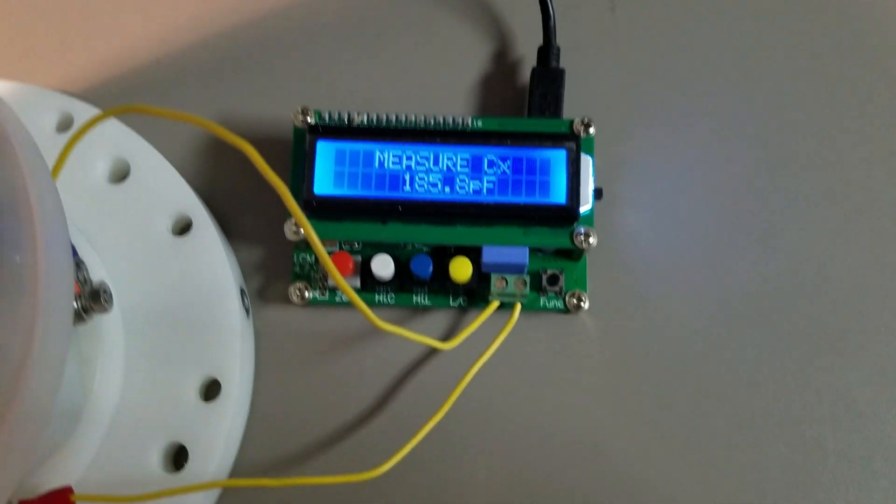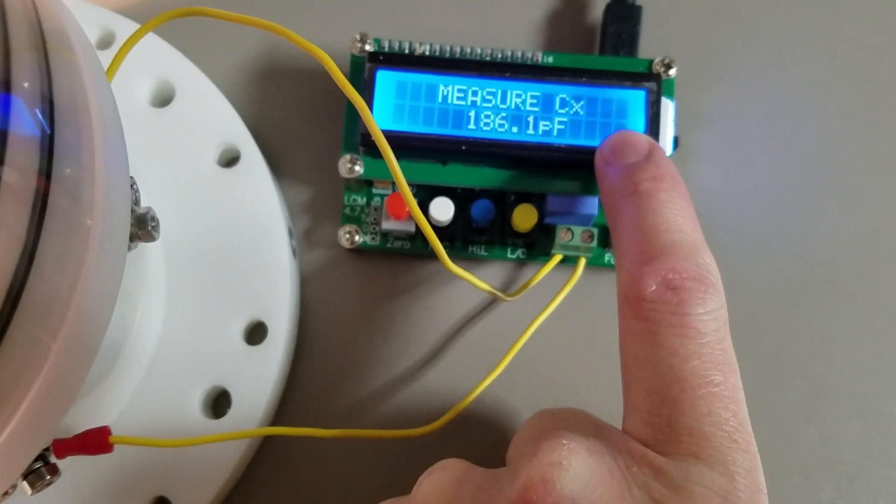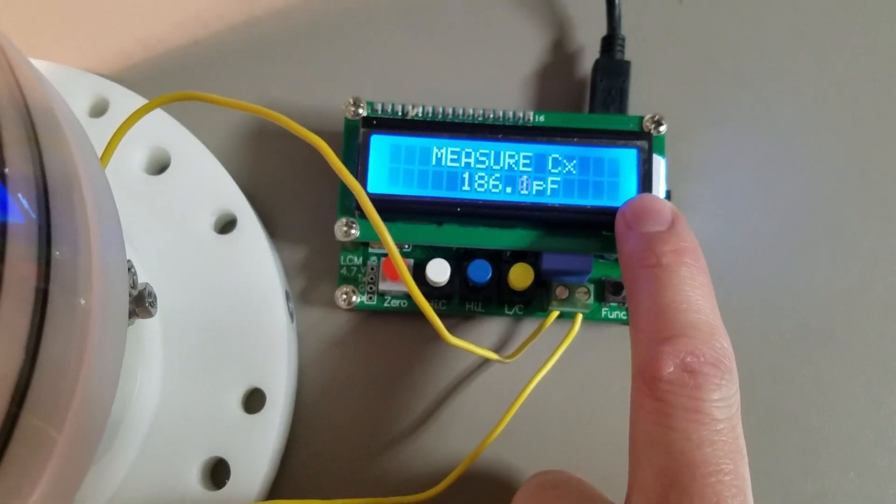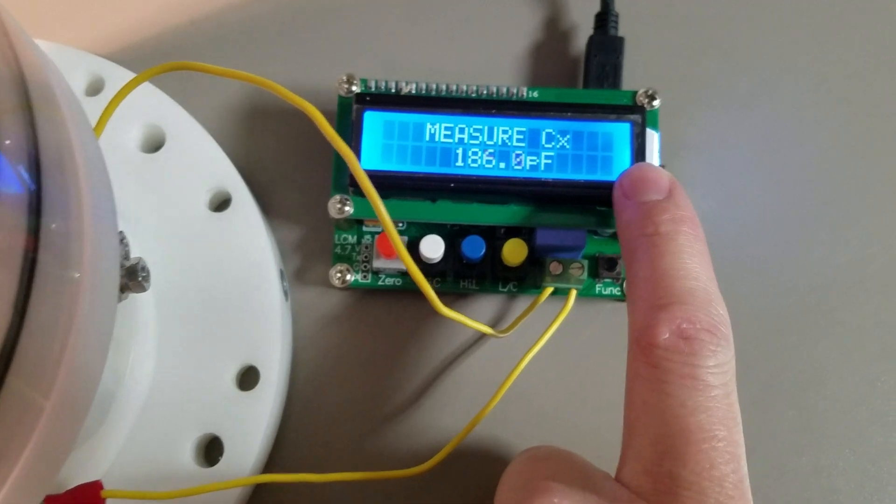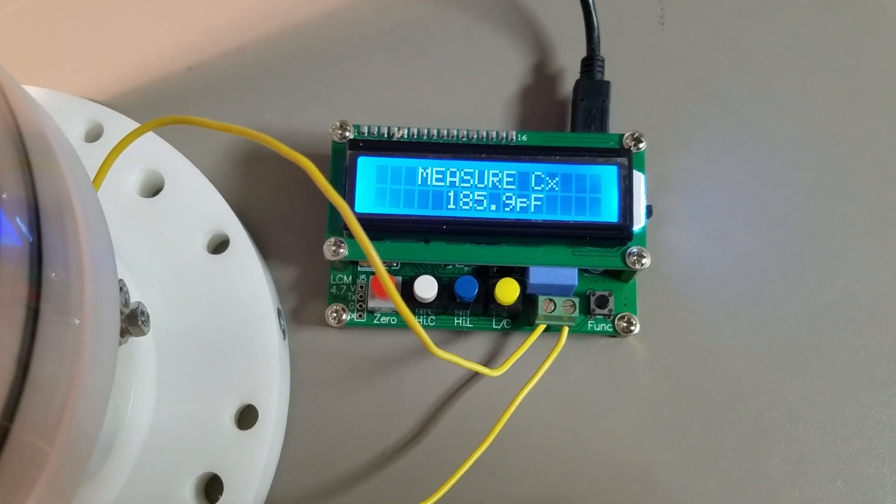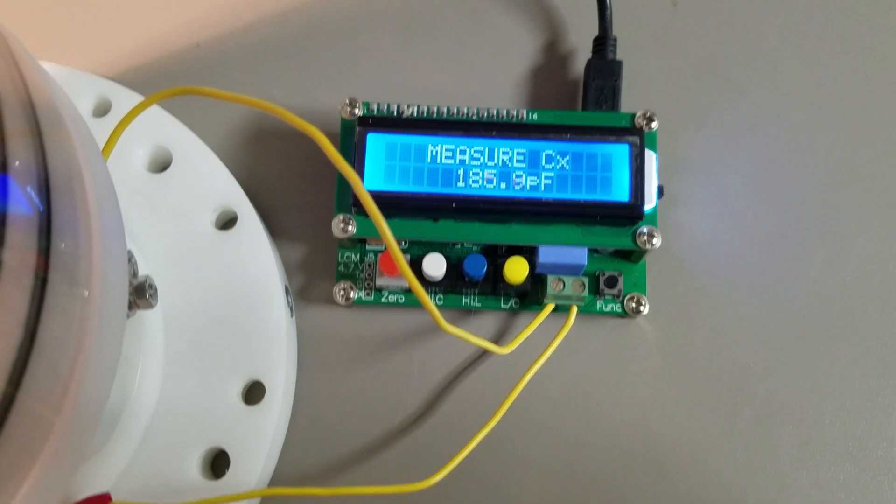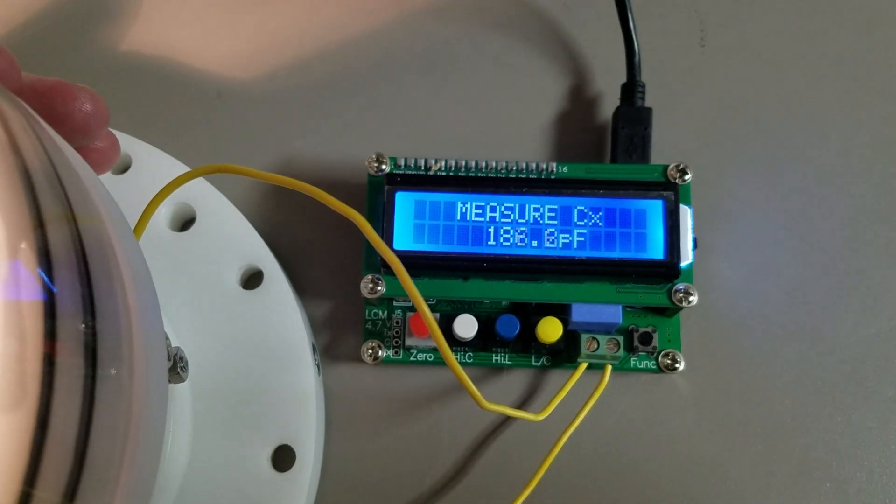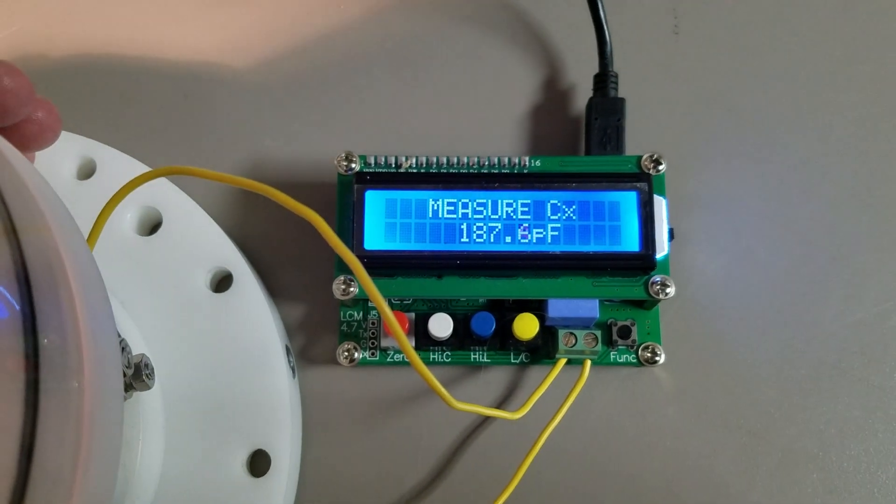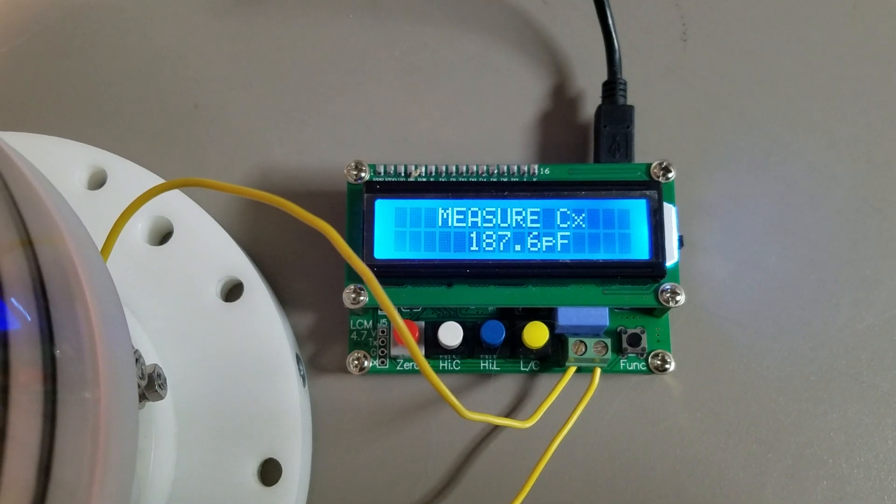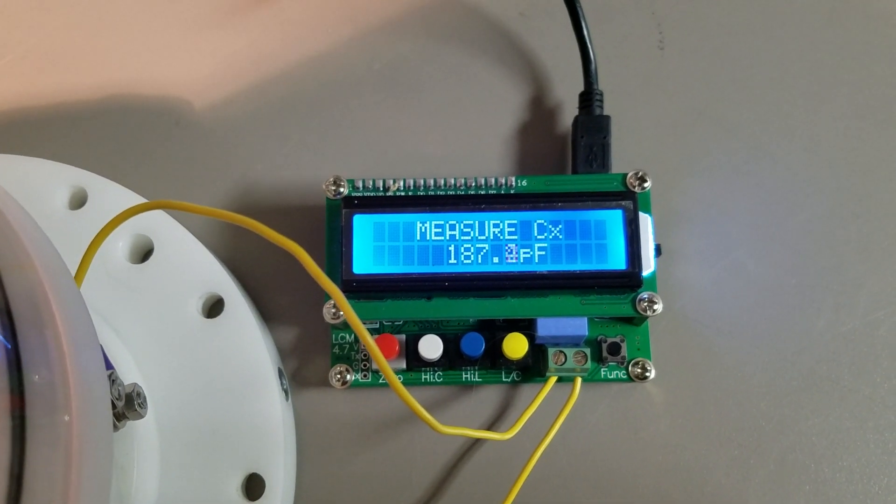So when I measure this with distilled water, you see right now I'm getting about 186 picofarads. When I measure it with tap water, I get something like 8,000 picofarads. And when I put my hand towards it, I wrap my hand around the cell, you can see the capacitance changes a little bit.